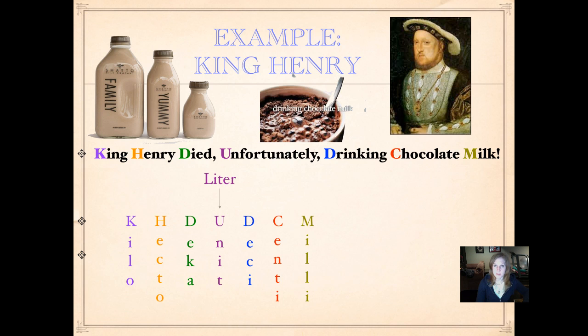So King Henry died, unfortunately, drinking chocolate milk stands for kilo, hecto, deca, unit, which in this case is going to be liter, desi, centi, and milli. Remember that the soft c sounds are to the right, desi and centi, they come together. And the hard k sounds are to the left, kilo and deca. Also, don't forget that centa means one hundredth. One hundred years, cent, century. One hundred cents equals a dollar. So those are some ways to help you remember that centa means one hundredth of something and milli means one thousandth of something. Kilo also means one thousandth, the whole number one thousandth.